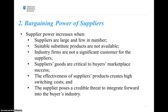Supplier power also increases when their products create high switching costs, and when the supplier poses a credible threat of forward integration — that is, entering the buyer's industry directly, becoming not just a supplier but a manufacturer and therefore a competitor. Obviously, that is not what we want as a company. For us as a firm, the lower the suppliers' bargaining power, the better.